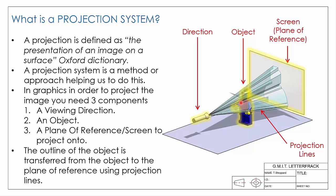This is our perspective projection — you can see the resulting image is larger than the original object, and that is what makes this perspective projection.